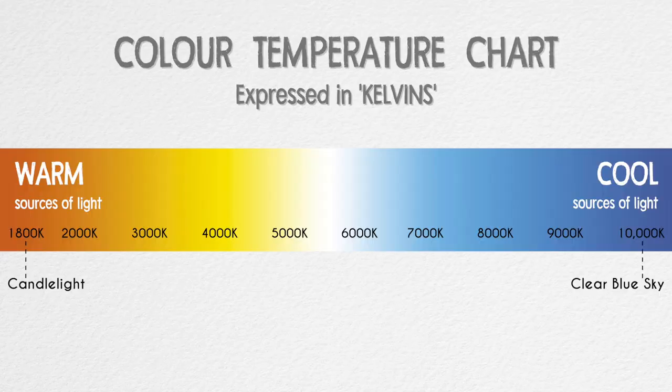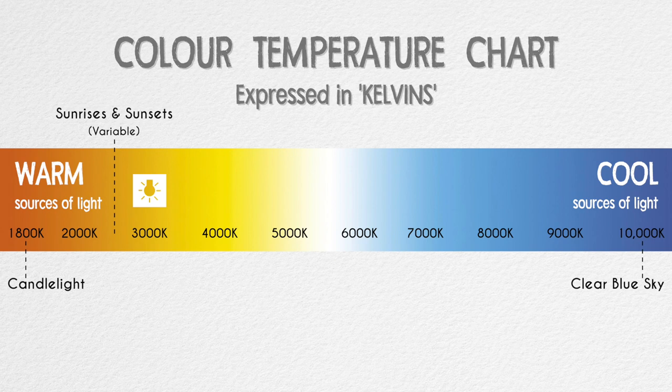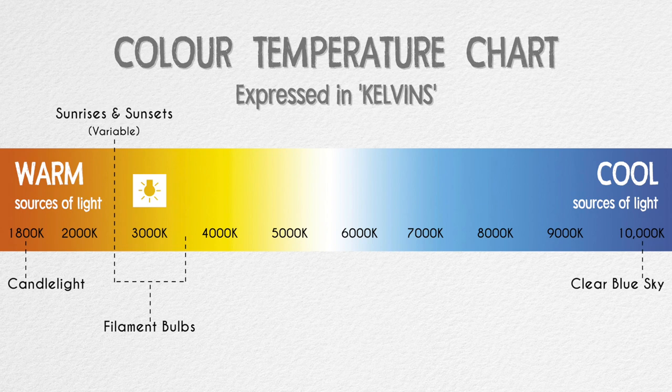Sunrises and sunsets have a warm color temperature and clock in at approximately 2500 Kelvin. Filament bulbs also fall in the warm range and sit between 2500 Kelvin and 3500 Kelvin. These light bulbs include Edison bulbs, incandescent bulbs and household tungsten bulbs.